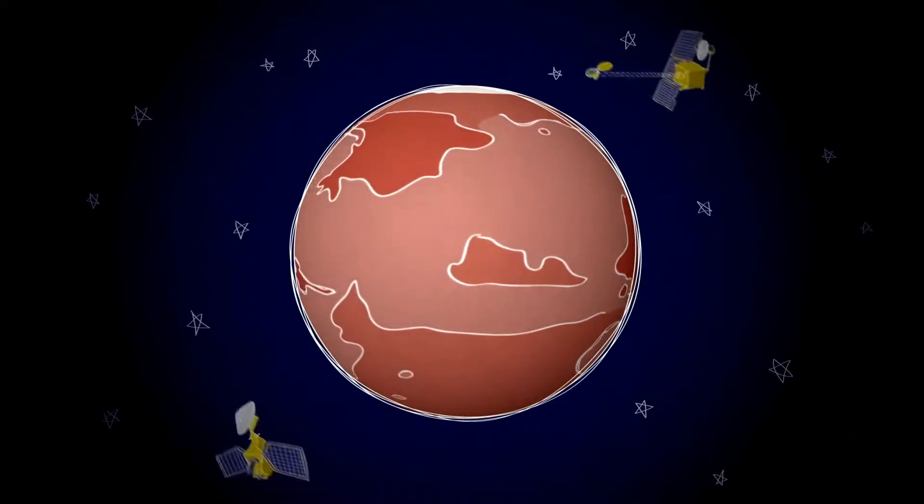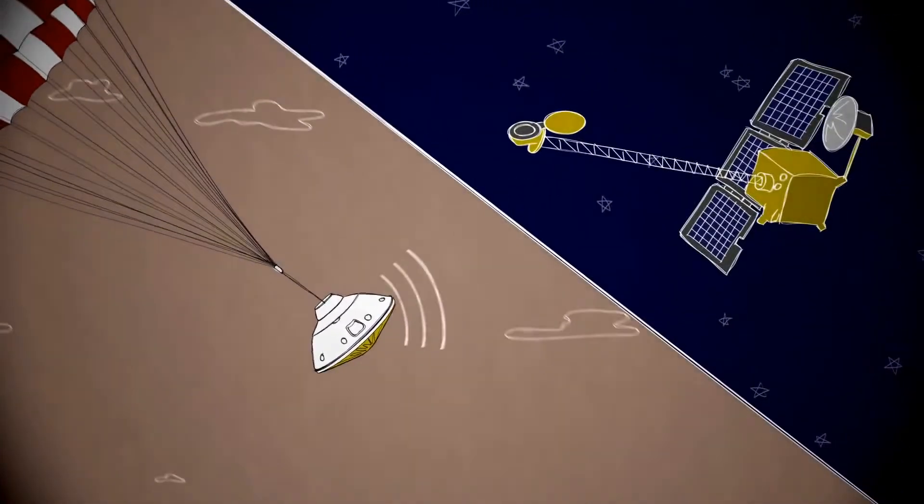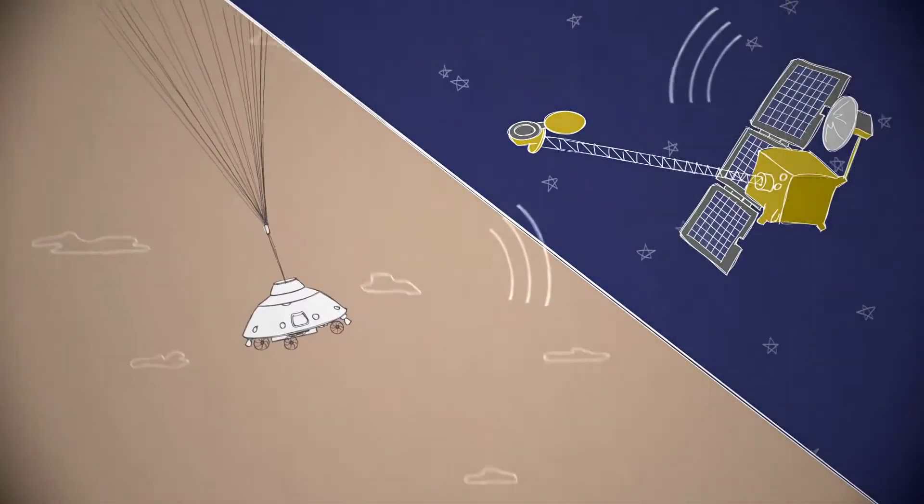But NASA has two spacecraft orbiting Mars that can help. For the second half of Curiosity's descent, the Mars Odyssey orbiter is in a good place to pick up the rover's signal and send it right back to Earth.